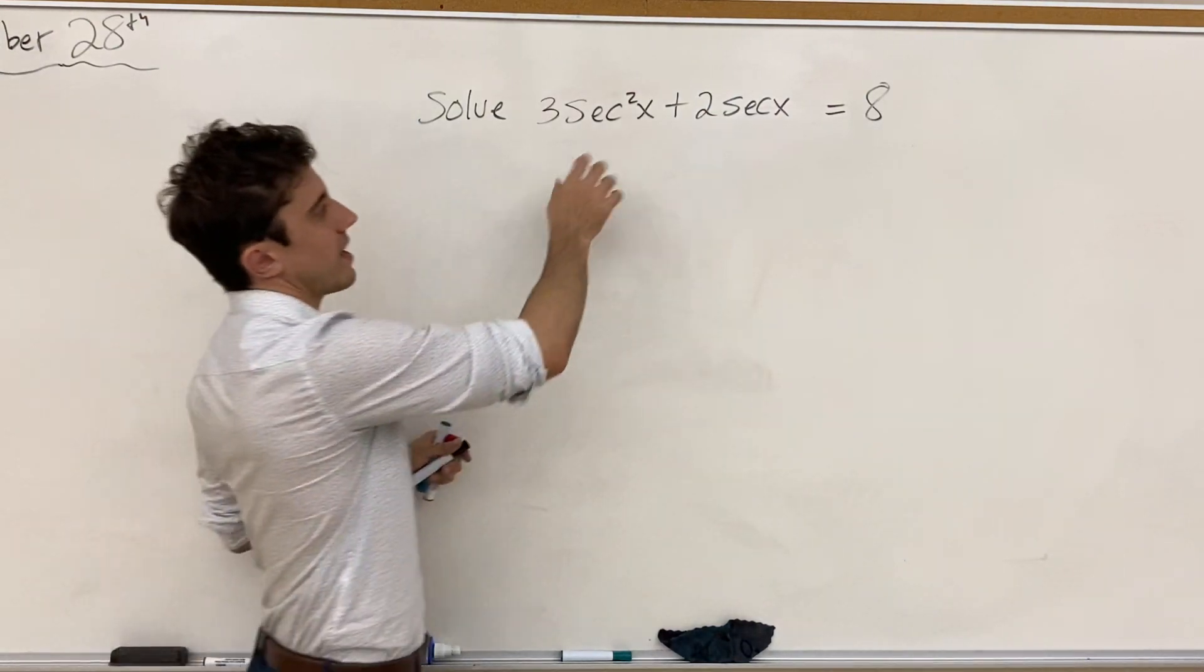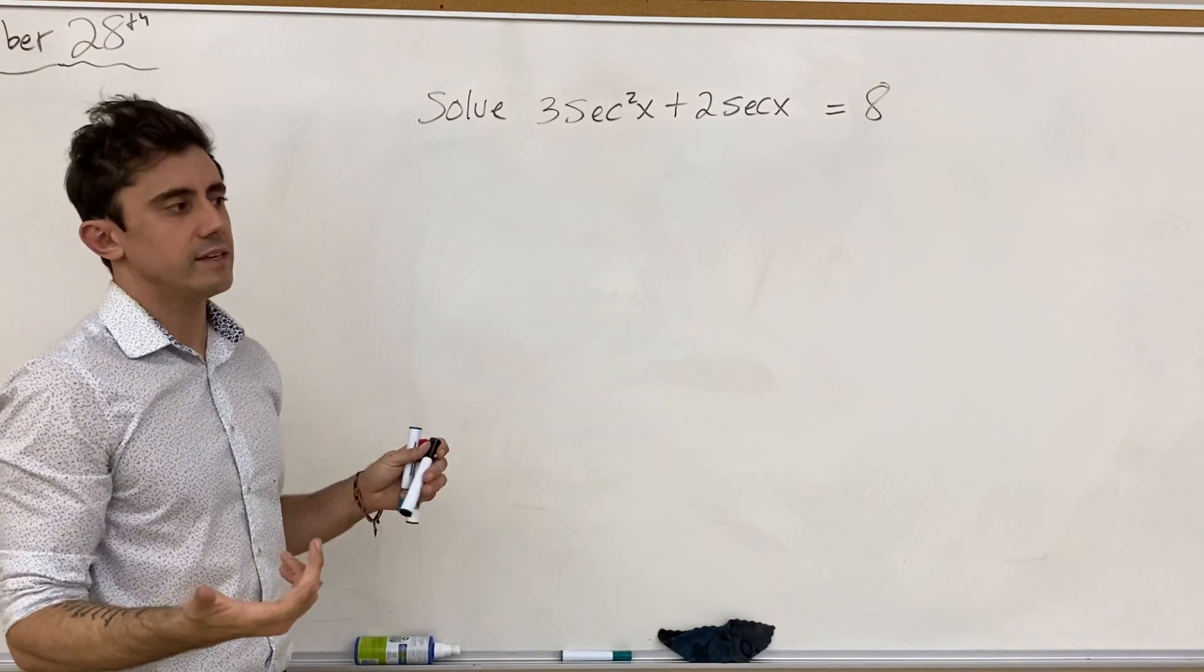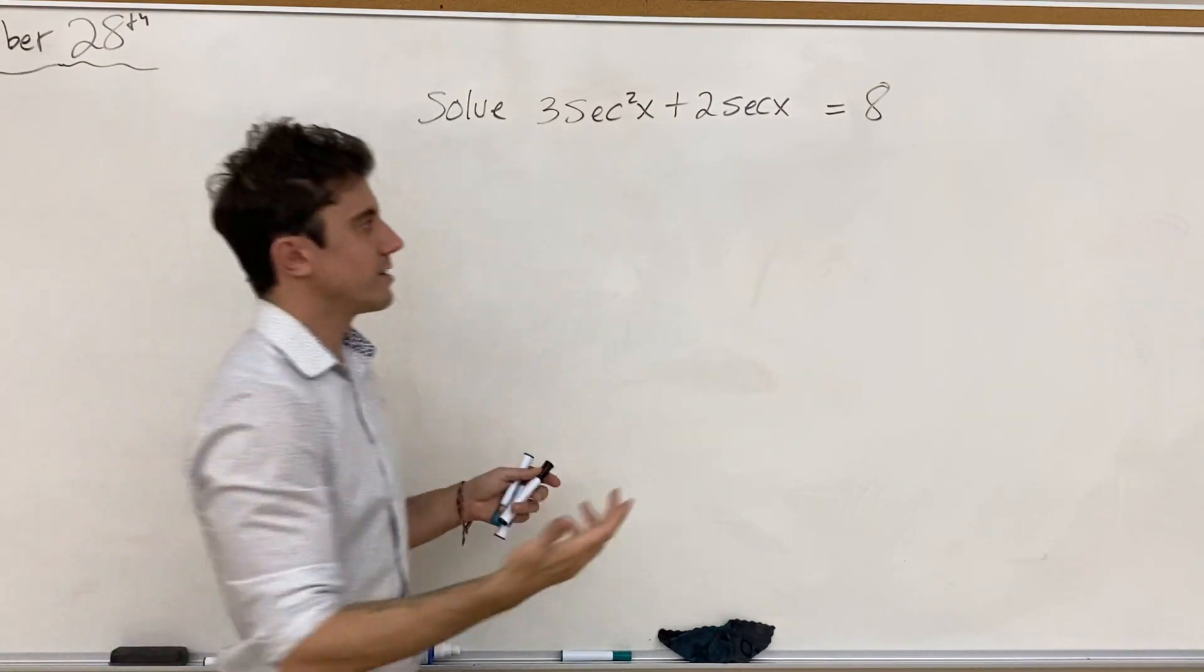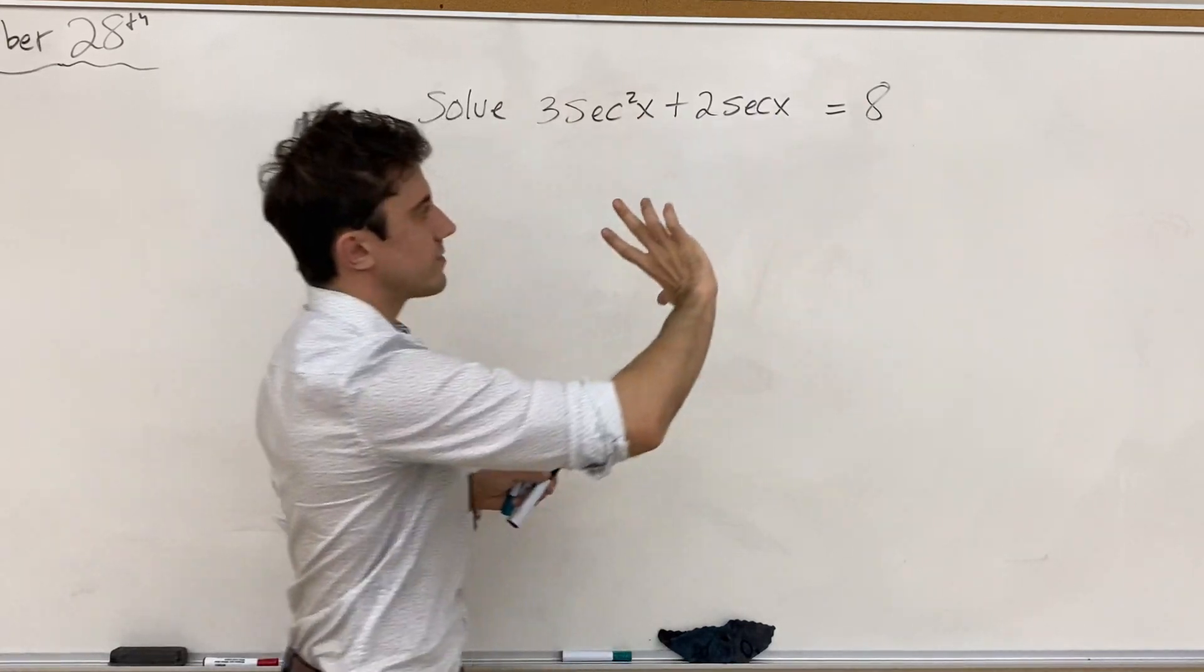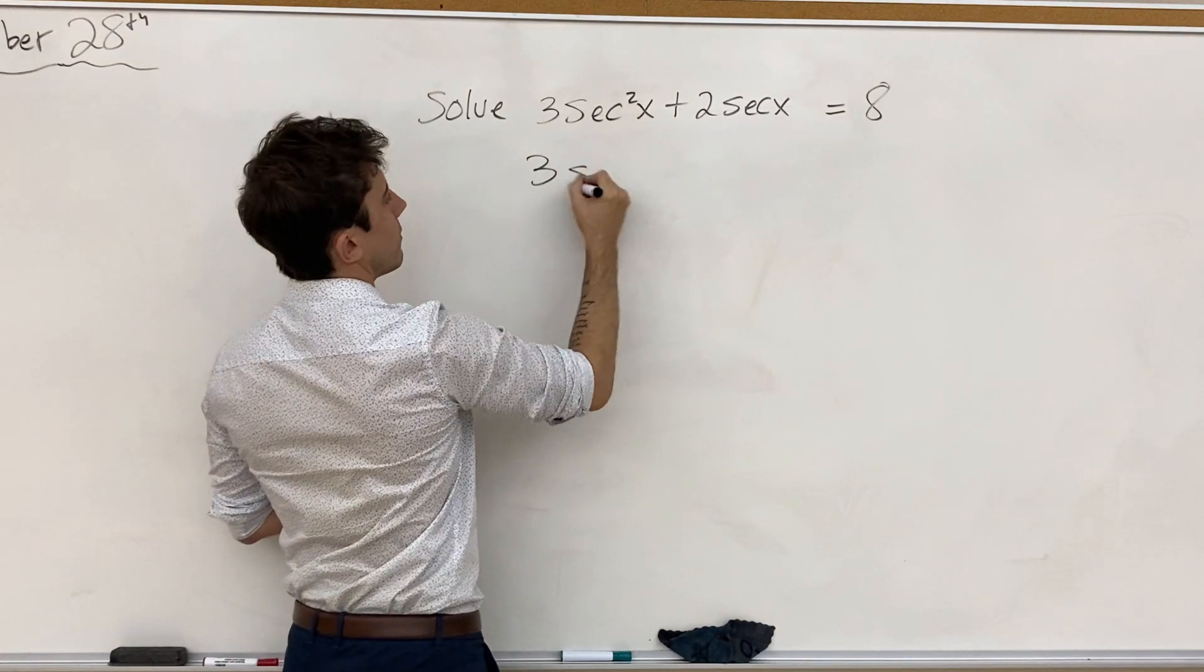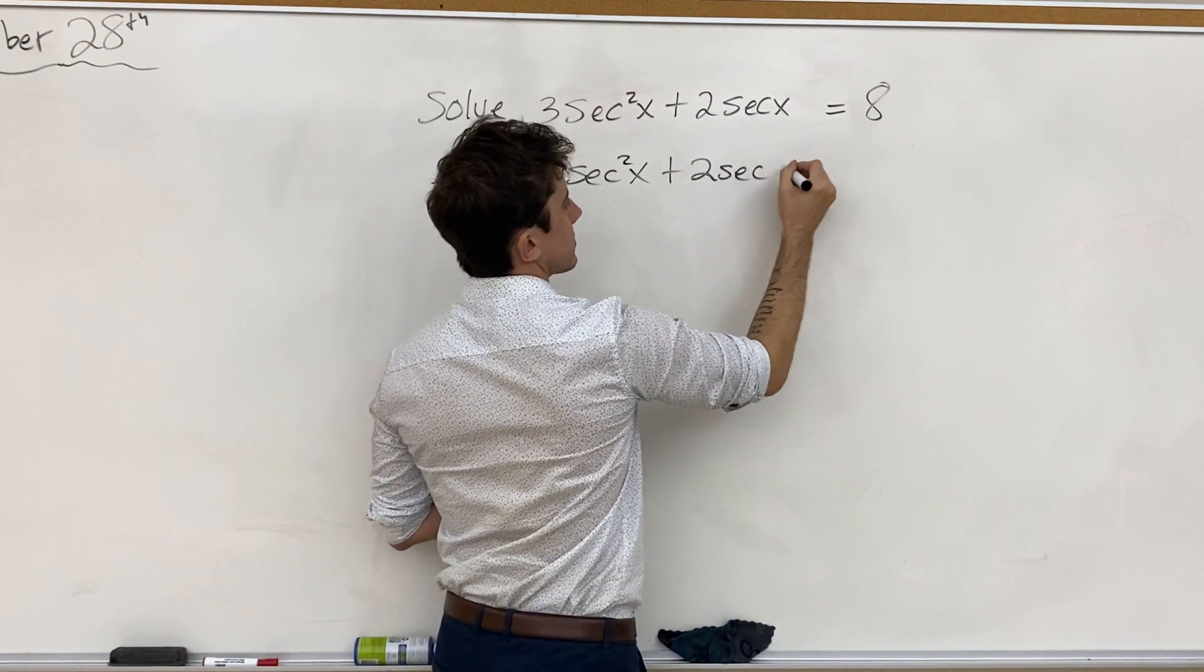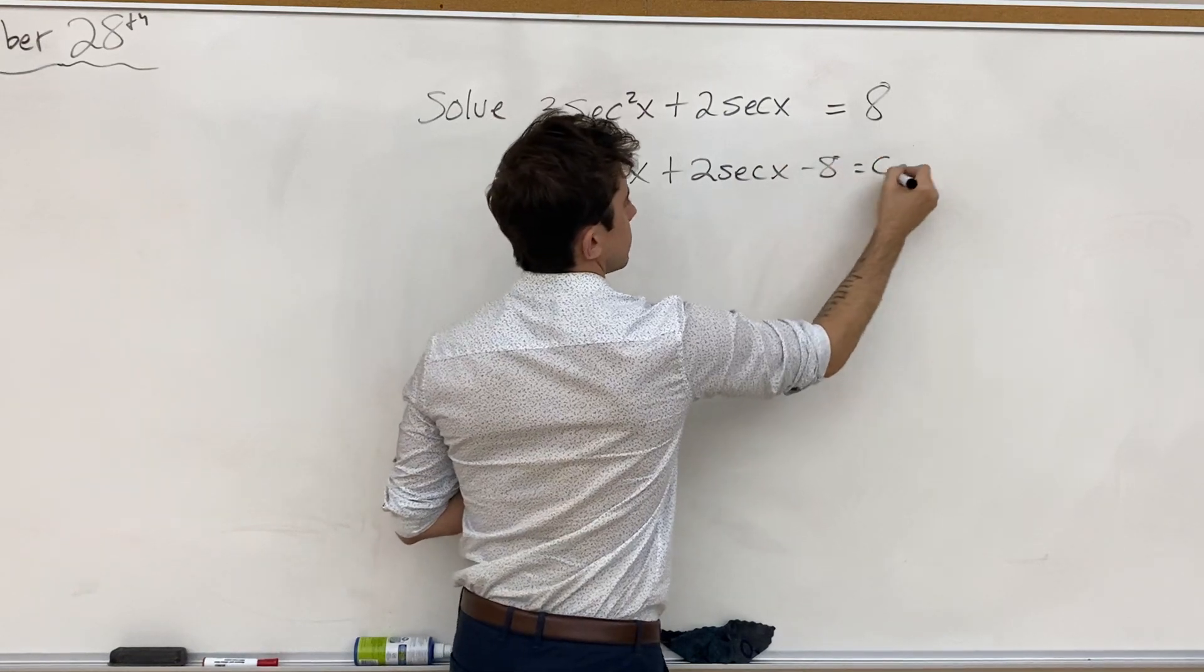First off, we may notice that this has the general form of a quadratic equation, and so in the spirit of solving a quadratic equation, let's move the 8 over to the left side so that we have something equal to 0. And so we now have 3 secant squared x plus 2 secant x minus 8 is equal to 0.